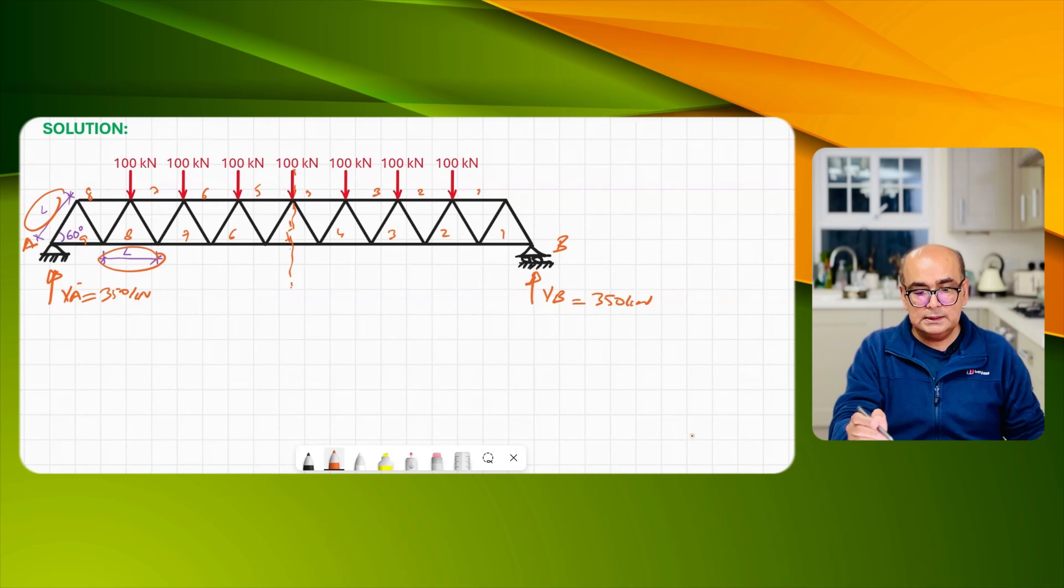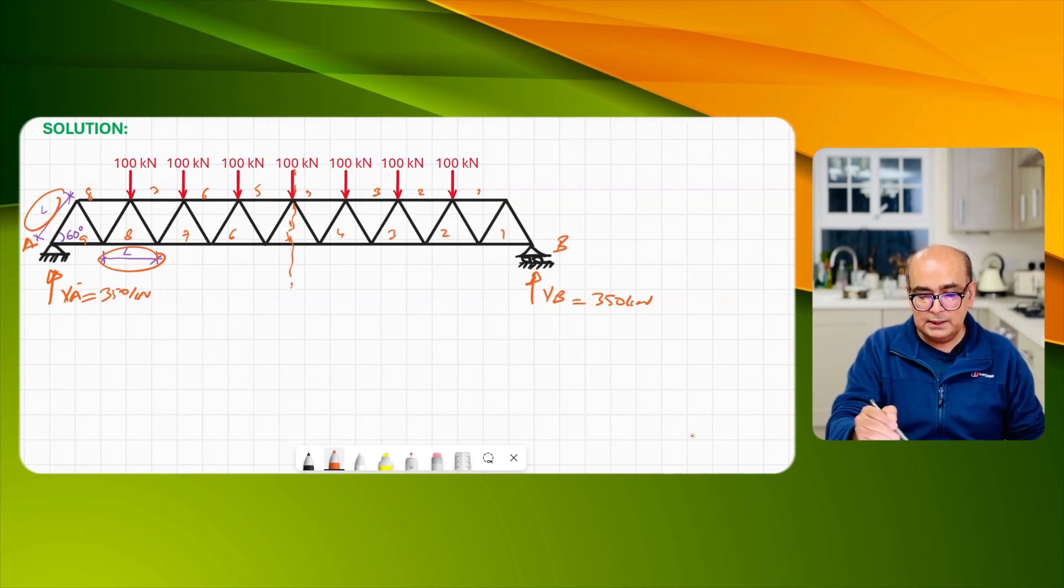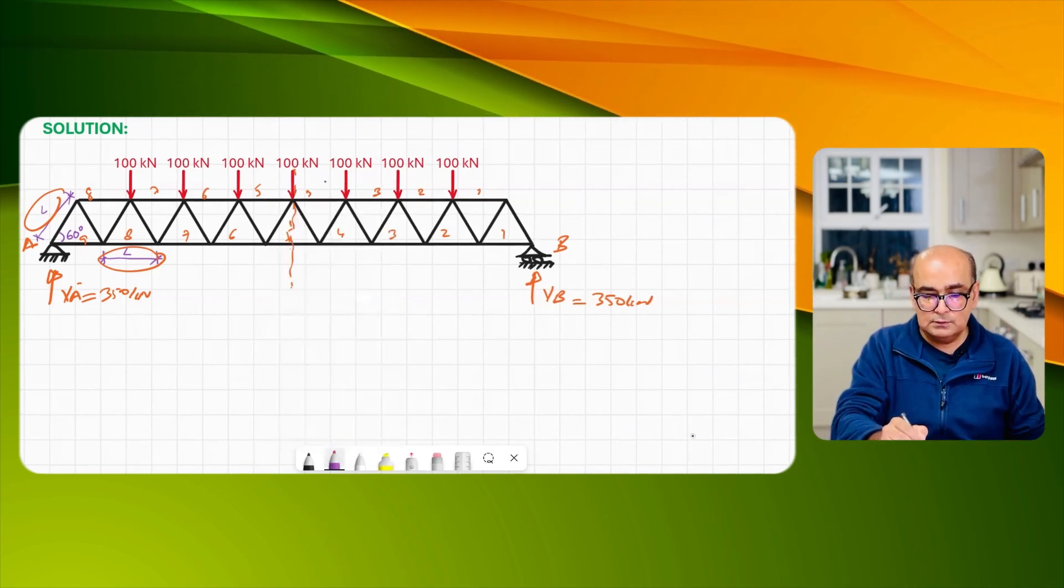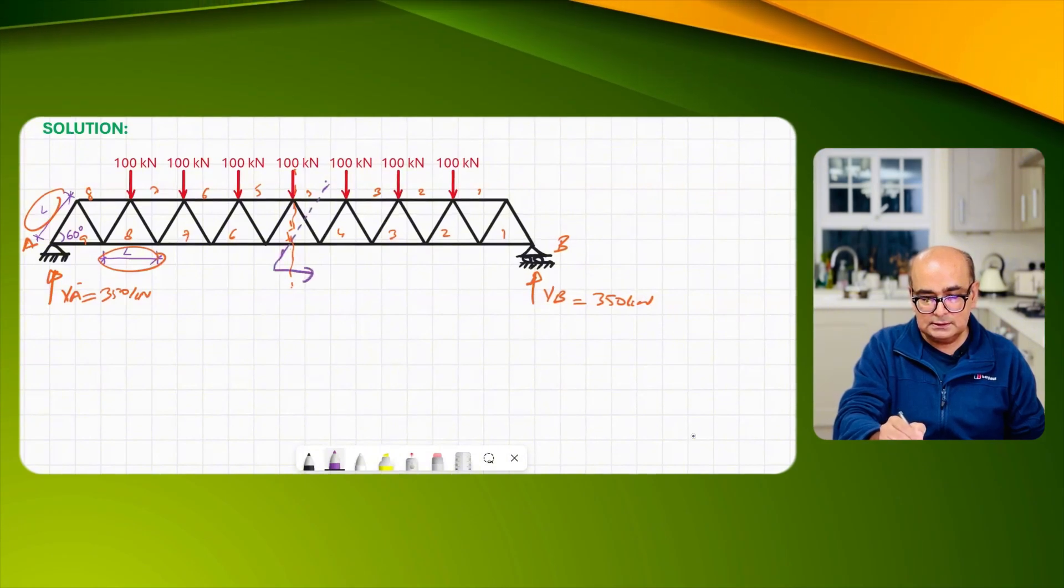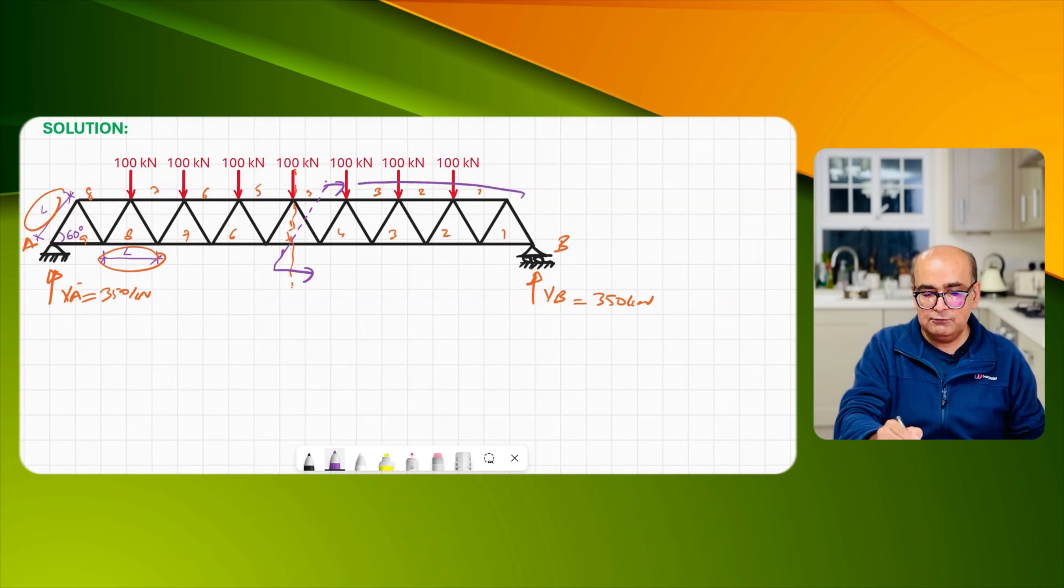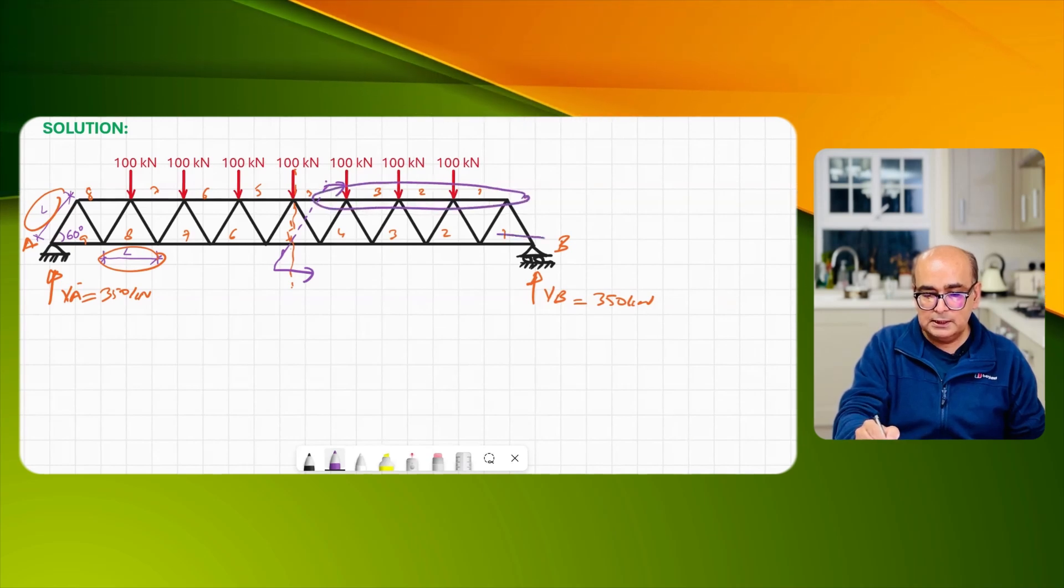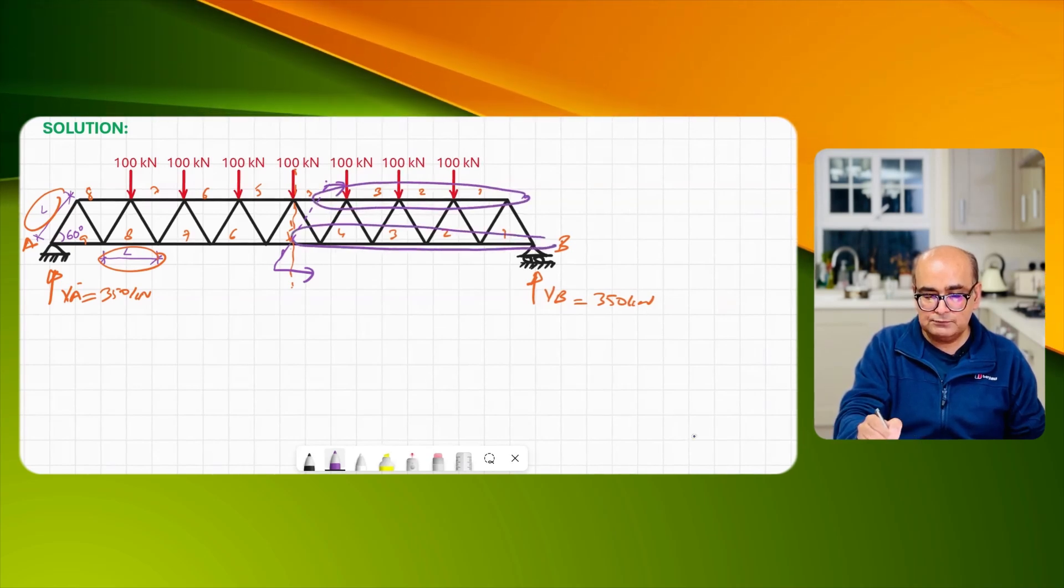I'm not clear where this load is going to happen. We have to take an inclined section like this taking three and a half panels from the top and four and a half panels from the bottom. Loads are 350 kilonewton.